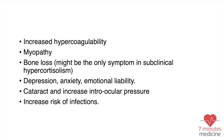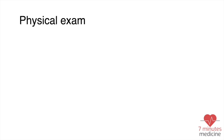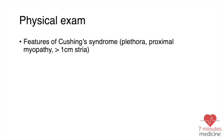As we saw, there are very diverse symptoms related to Cushing syndrome and we have to keep a high index of suspicion to detect these patients. For the physical exam, you should look for features such as plethora, proximal myopathy, striae more than one centimeter, central obesity, and buffalo hump.